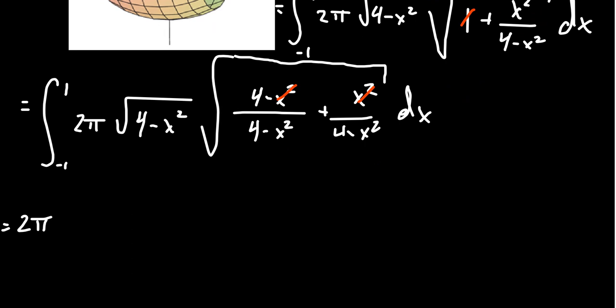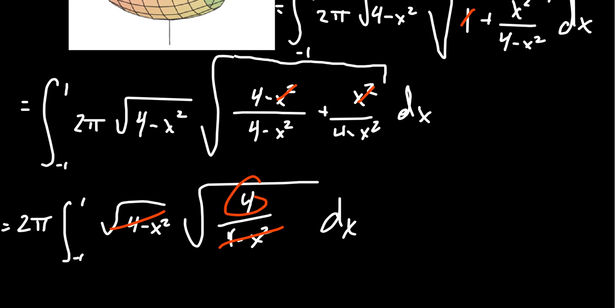We're going to have 2π, the integral from negative 1 to 1, the square root of 4 minus x squared, times the square root of 4 over 4 minus x squared dx. In this situation, now we have a square root of 4 minus x squared that cancels the square root of 4 minus x squared. We now have a square root of 4, which itself is just 2. And so then we're going to end up with 2π times the integral from negative 1 to 1 of 2 dx. Told you this wasn't so bad at all.